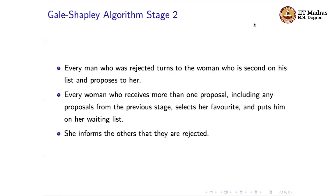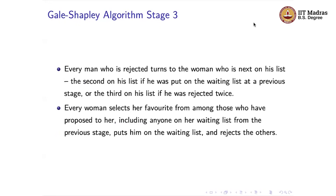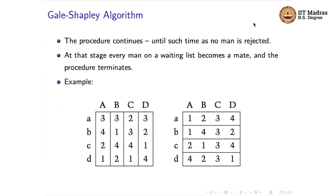The procedure continues: in the third stage and beyond, every man who is rejected — whether for the first or second time — turns to the next woman on his list and proposes. The women act exactly as before: if they have more than one proposal they keep their favorite in the waiting list and reject the others. We keep following this procedure until no man is rejected. At that stage every man on the waiting list becomes the partner, and the procedure terminates.